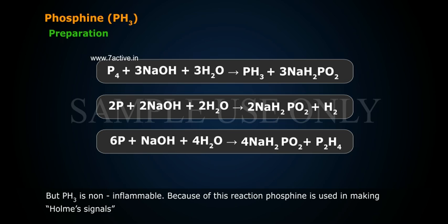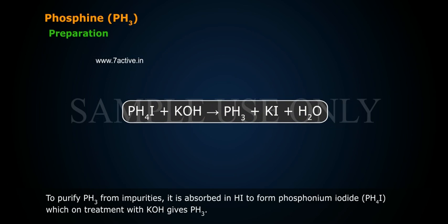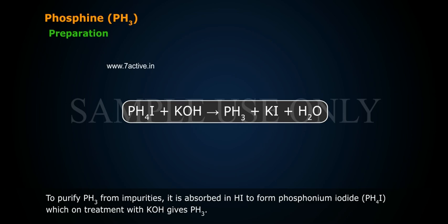Because of this reaction, phosphine is used in making home signals. To purify PH3 from impurities, it is absorbed in hydrogen iodide to form phosphonium iodide (PH4I), which on treatment with KOH gives PH3.